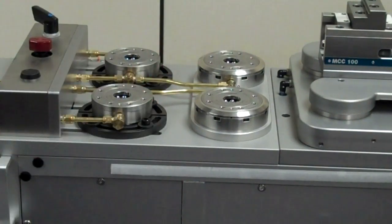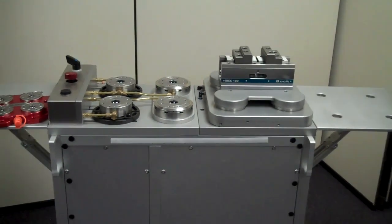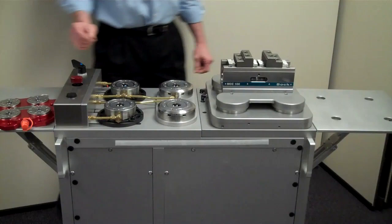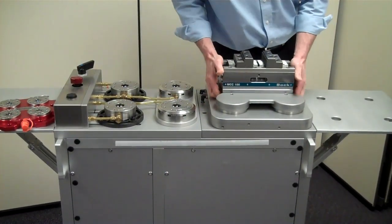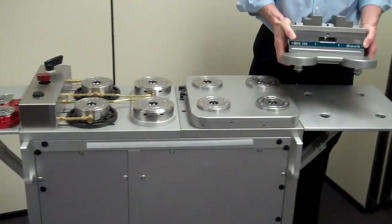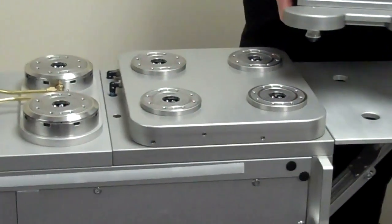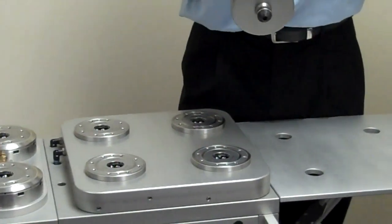We'll use our ZPS card to simulate a potential vise change on a machine. In this case, we have an MCC100 five-axis vise attached to a fixture plate with four ZPS studs on the bottom.